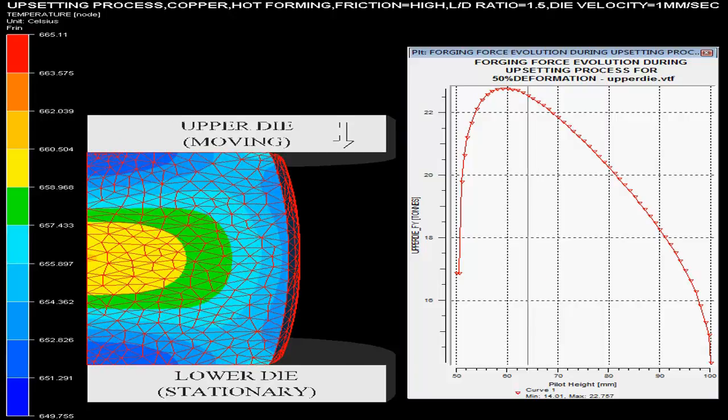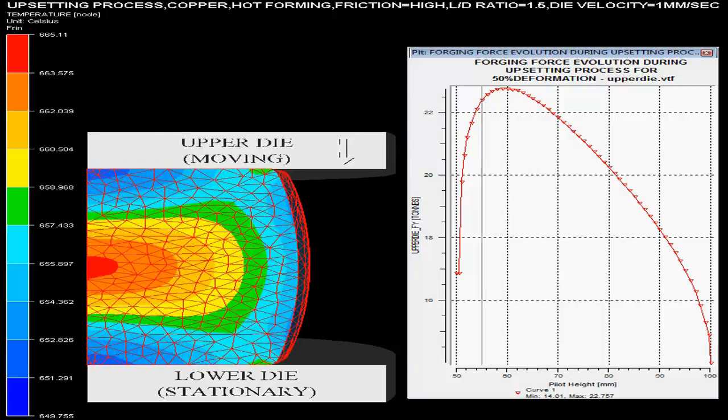The scale on the left hand side describes the temperature in the billet changing during the process.